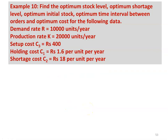We now take a numerical example to calculate the various parameters of Model 4. Find the optimum stock level, optimum shortage level, optimum initial stock, optimum time interval between orders, and optimum cost for the following data: demand rate R = 10,000 units per year, production rate K = 20,000 units per year, setup cost C3 = ₹400, holding cost C1 = ₹1.6 per unit per year, and shortage cost C2 = ₹18 per unit per year.